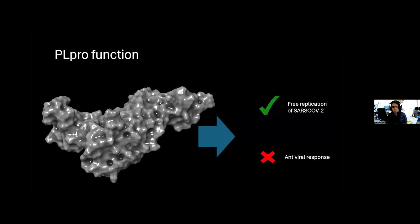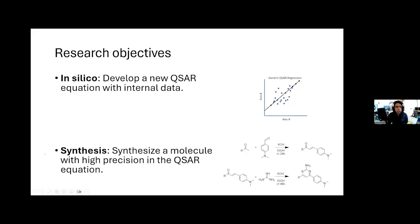PLpro is the protein shown in this slide. PLpro allows viral replication of SARS-CoV-2 and has the function to inhibit the antiviral response of the cells and tissue nearby against the virus. Therefore, our research objectives are: one, in silico, to develop a new QSAR equation with actual data, and then to synthesize different molecules following this QSAR equation.